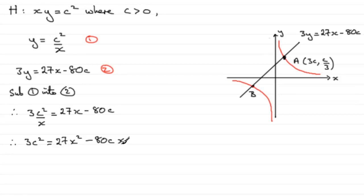We've got a quadratic equation here, so we need to rearrange it. Let's take the 3C squared from both sides and that gives us therefore 27X squared minus 80CX minus the 3C squared equals 0.